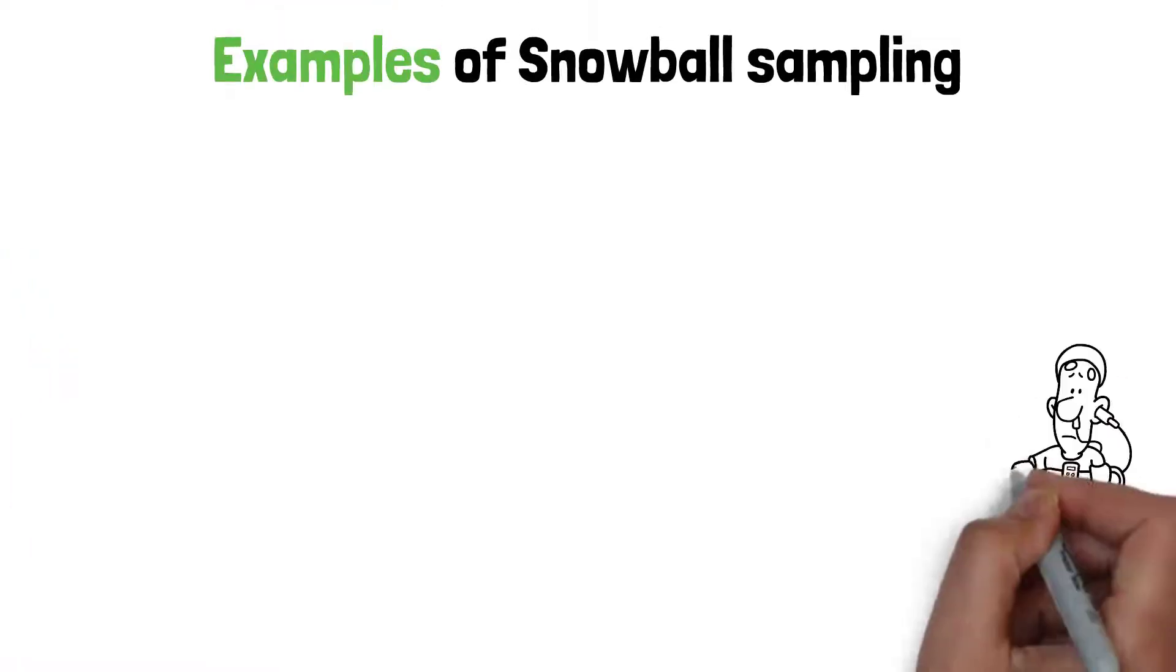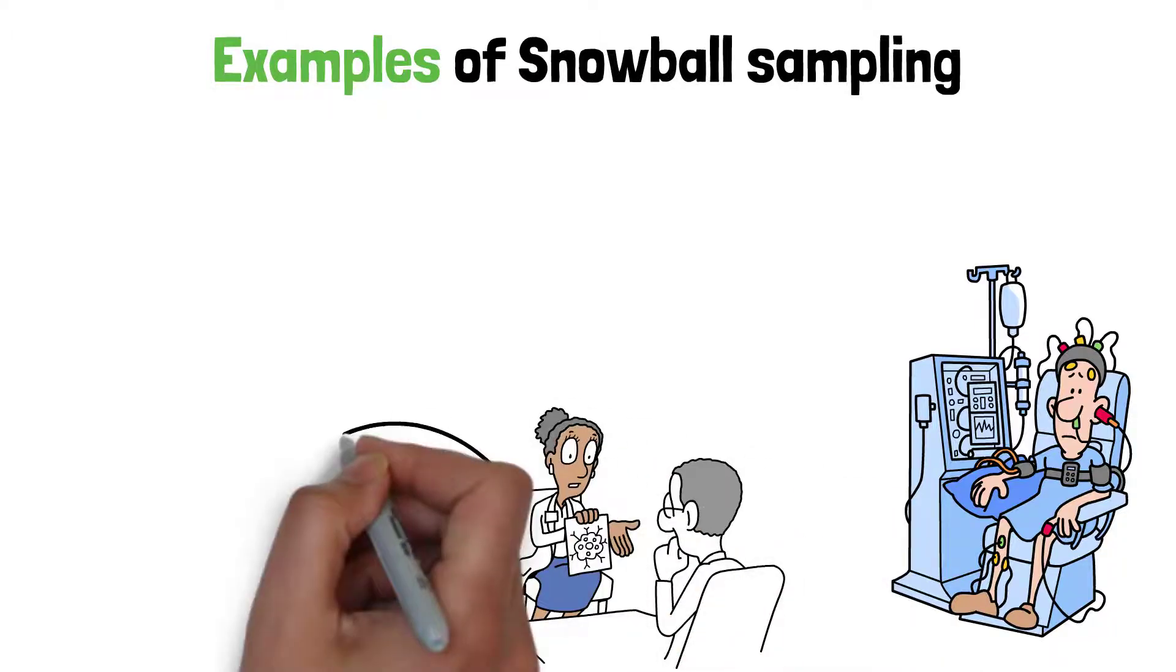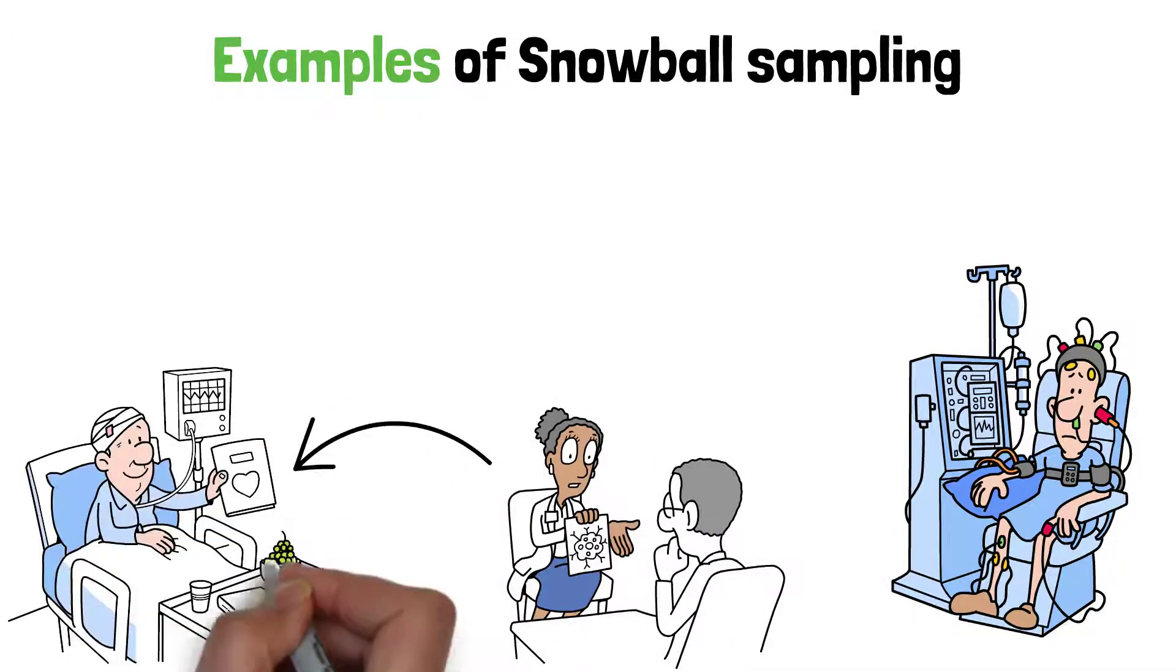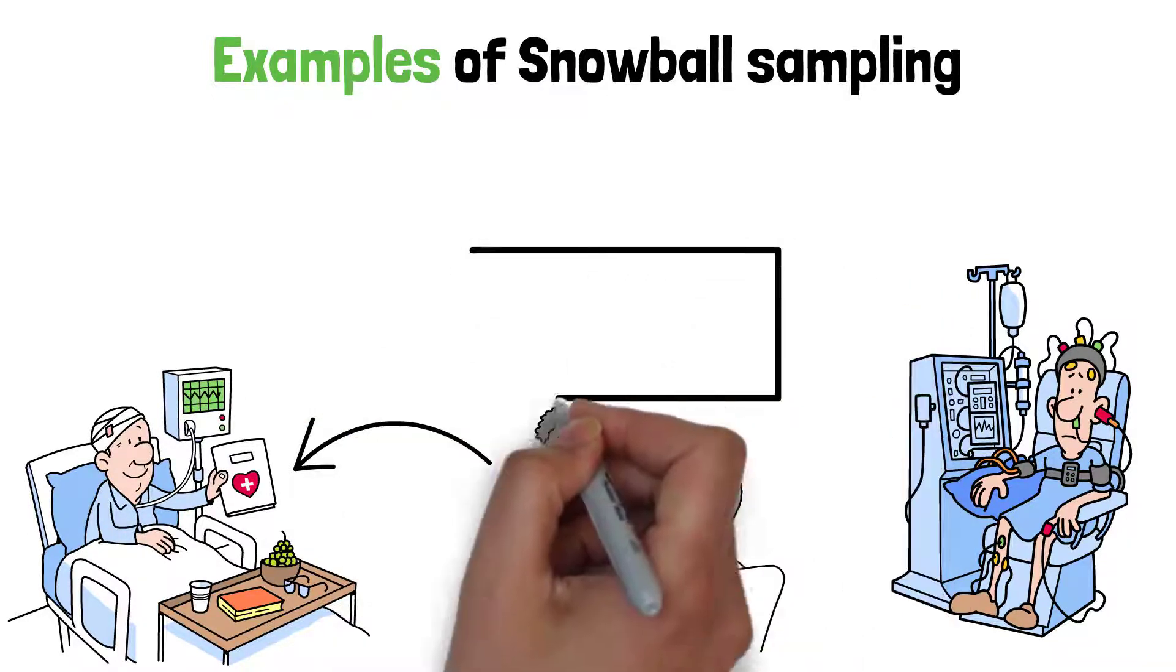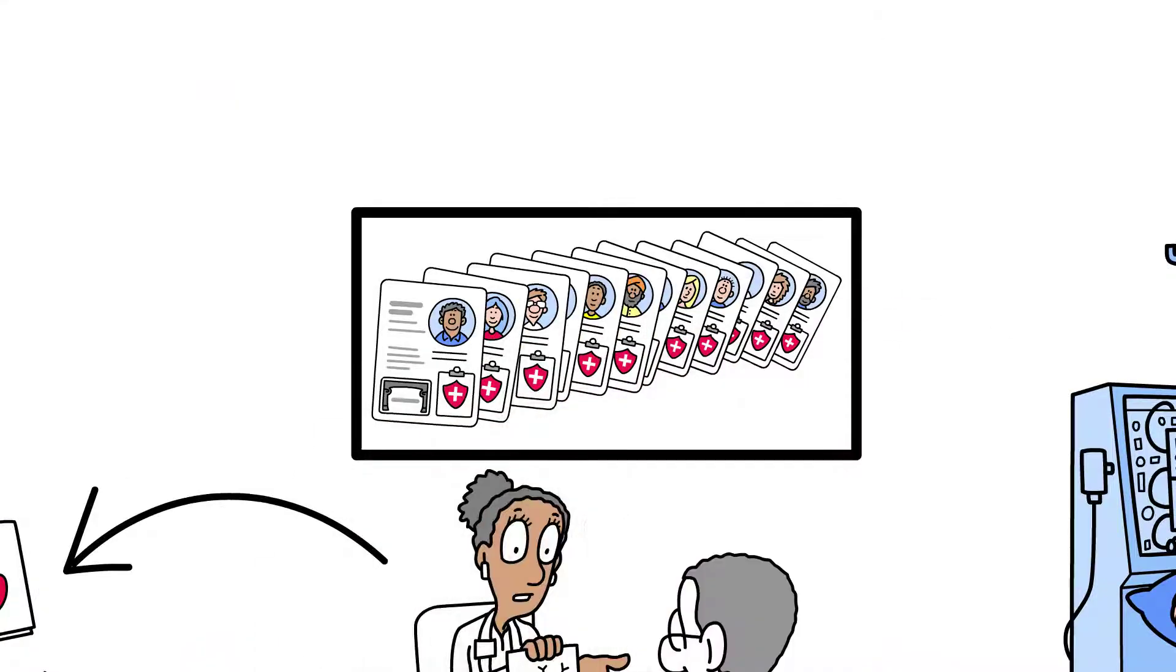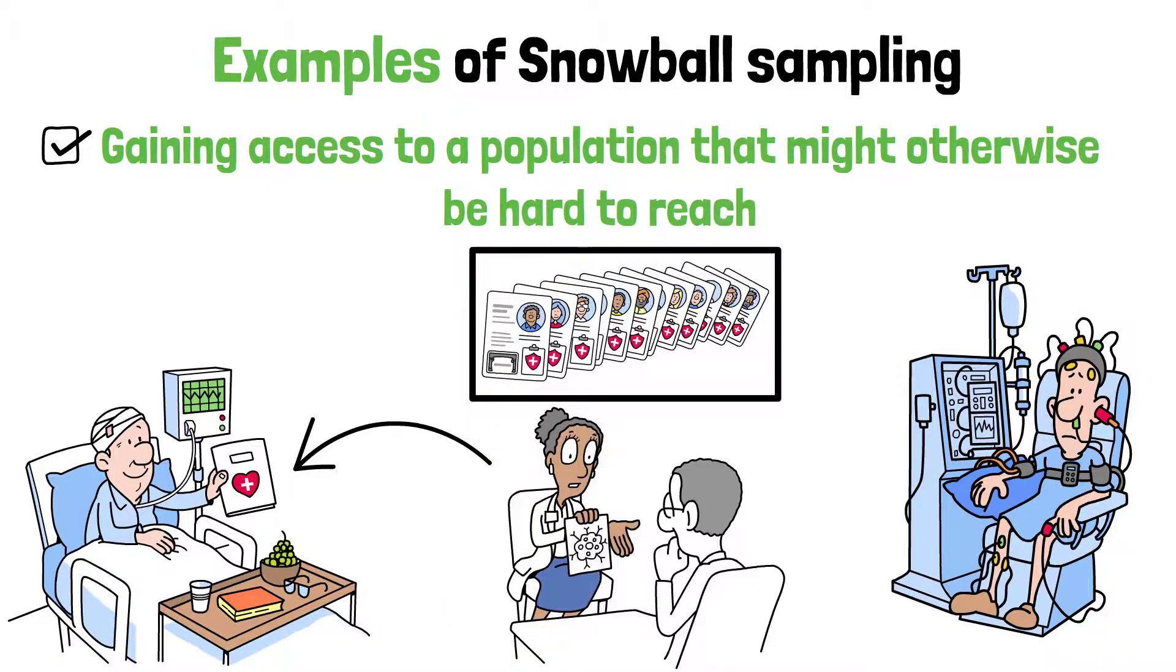Another example could involve studying people with a rare medical condition. The researcher might start with a few patients they know, and those patients could then refer others with the same condition. As the patients recommend more individuals, the researcher builds a larger sample group, gaining access to a population that might otherwise be hard to reach.